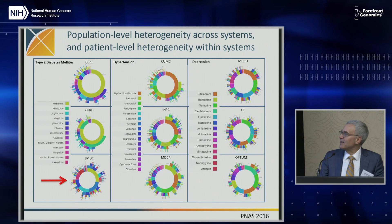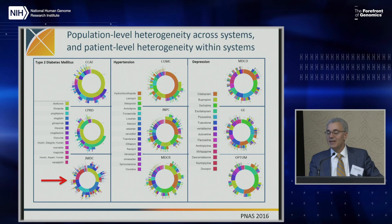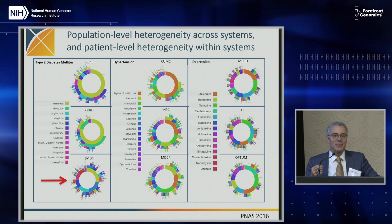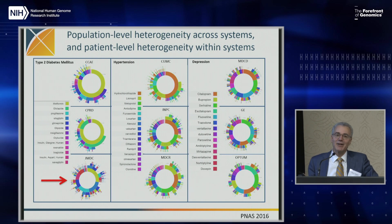For hypertension, we see less agreement, and for depression, it's pretty much a random pick of drugs — and these are three U.S. databases that look so different from each other. Interestingly, a quarter of people took a sequence of drugs for hypertension that no one else in the database took. So if you look up someone's drug sequence and ask what did someone else with the same sequence do, no one else had that sequence — we have very variable treatment.